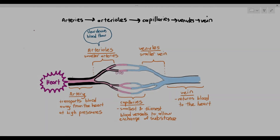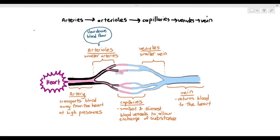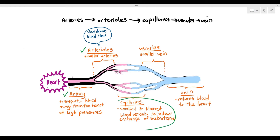In the previous video, we talked about the artery and arterioles. So in this particular video, we are going towards the next blood vessels, which are known as the capillaries. The capillaries are the smallest and thinnest blood vessels to allow the exchange of substances.